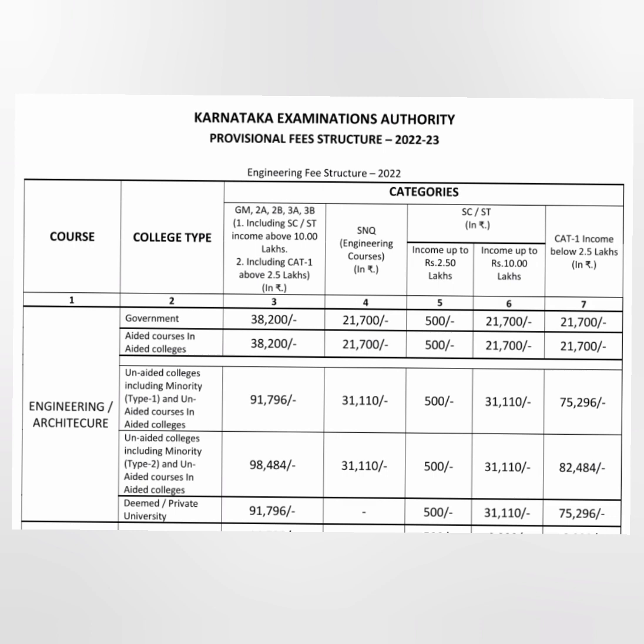For the first college type — government colleges — fees for general GM, 2A, 2B, 3A, 3B students is 38,000 per year. There are about 14 government colleges in Karnataka. The SNQ fee for the same government college is 21,000. For SCST students, if income is less than 2.5 lakhs the fee is just 500 rupees; if income is between 2.5 and 10 lakhs, the fee becomes 21,700. Category 1 students also pay 21,700. So 21,700 applies for SNQ, SCST (above 2.5 lakhs), and Category 1 in government colleges.